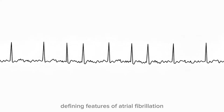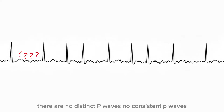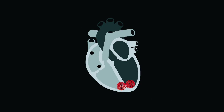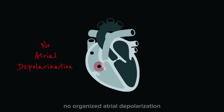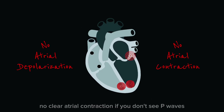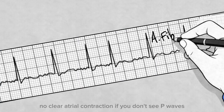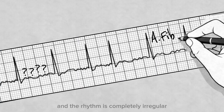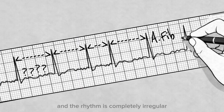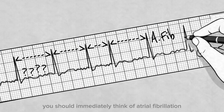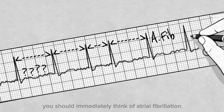And this leads us to one of the most defining features of atrial fibrillation: there are no distinct P waves, no consistent P waves, no organized atrial depolarization, no clear atrial contraction. If you don't see P waves and the rhythm is completely irregular, you should immediately think of atrial fibrillation.